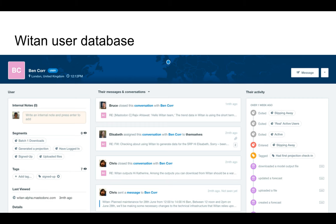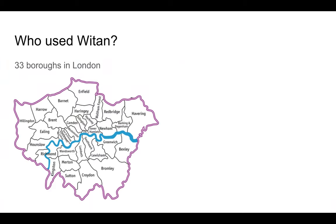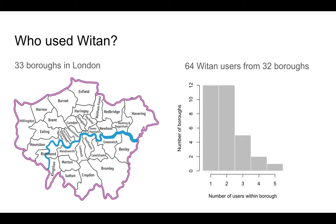We were able to use this to tag which boroughs users were from. Who used Witan? There were 33 boroughs in London, and we had 64 users in 32 boroughs — that's an average of two borough users per borough. However, there was some variation around this. The graph shows the number of users per borough. In quite a few boroughs there was only one user, whereas in one there were five.